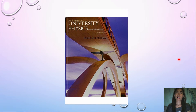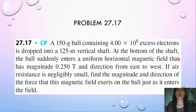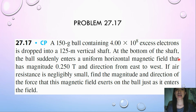Hi everyone. Another problem will be solved today from University Physics, 14th edition. We will be talking about problem 27.17. A 150-gram ball containing 4.0 times 10 to the 8 excess electrons is dropped into a 125-meter vertical shaft. At the bottom of the shaft, the ball suddenly enters a uniform horizontal magnetic field with a magnitude of 0.250 T directed from east to west. If air resistance is negligibly small, find the magnitude and direction of the force that this magnetic field exerts on the ball just as it enters the field.